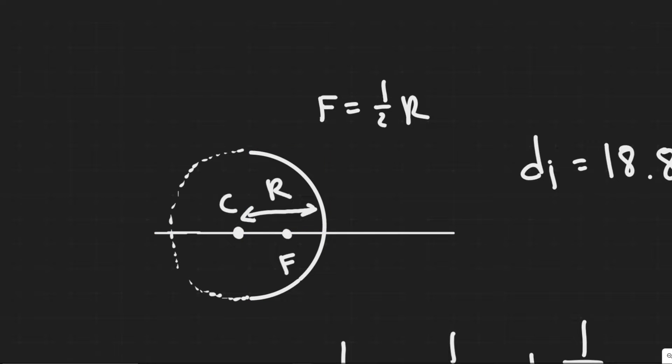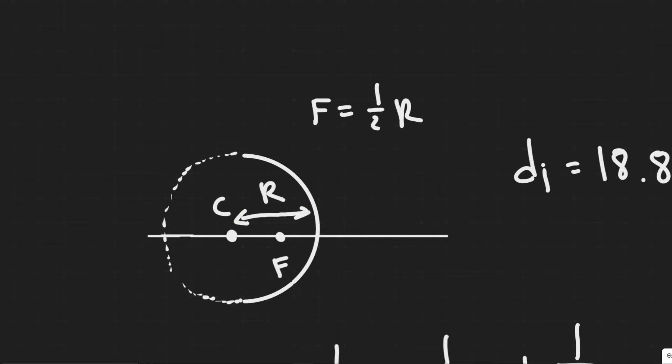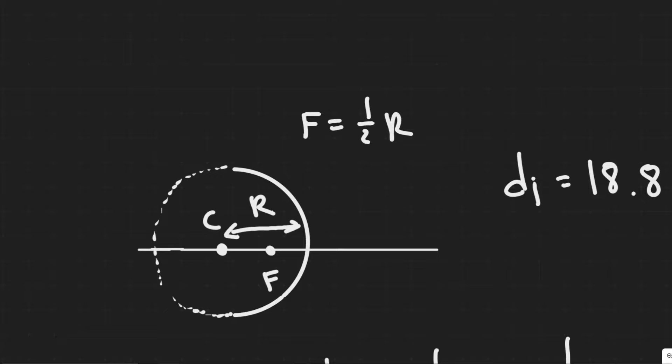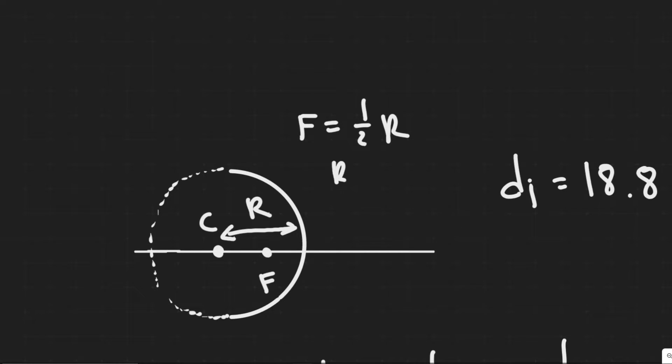And that basically tells us if I want to find the radius, which is the radius of the spherical surface or the radius of curvature, all I got to do is find the focal length, since R equals 2F, if I just multiply both sides by 2. So this tells me if I can find the focal length, I can go ahead and find R.